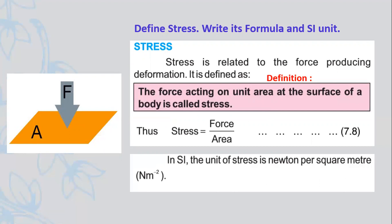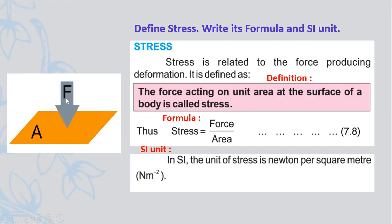Looking at the formula of stress: stress is equal to force over area. It is just like the formula of pressure. In SI units, the unit of stress is Newton per meter square. The area unit is meter square and force unit is Newton, giving Newton per meter square. This force acting on any surface area basically produces stress. Stress equals force over area, and the unit is Newton per meter square.